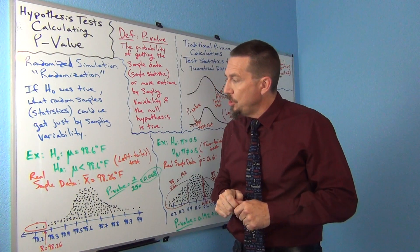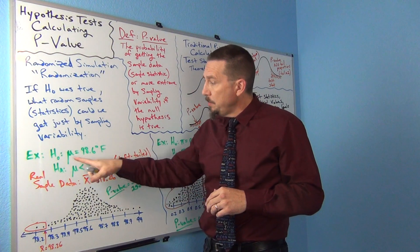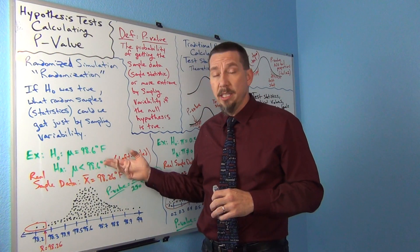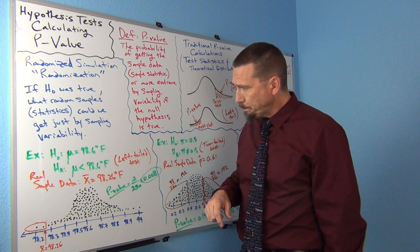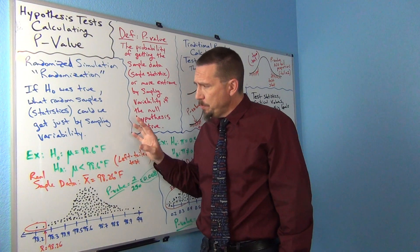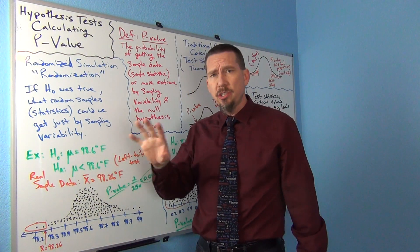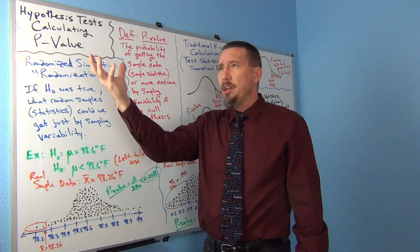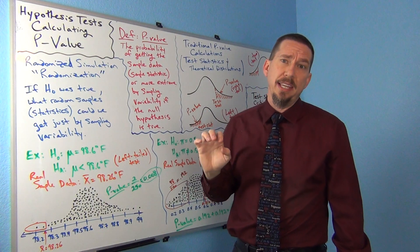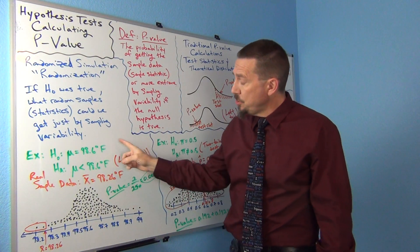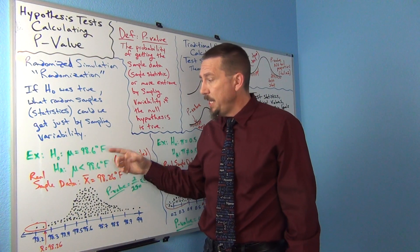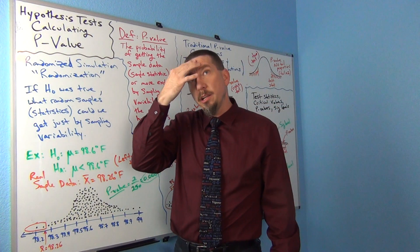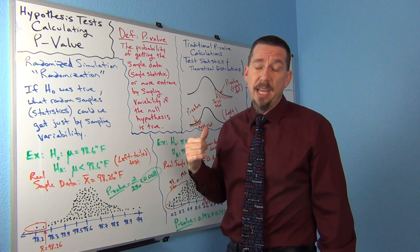Let's suppose we had a null and alternative hypothesis. This is an example we looked at before: that normal body temperature is 98.6 degrees. But nowadays some people are thinking that maybe normal body temperature is actually less than 98.6 degrees Fahrenheit. What the computer is going to do is assume the null hypothesis is true — that normal body temperature really is 98.6 — and then start drawing random samples under the premise that 98.6 is the population mean. Usually the sample size would match your original real sample data.